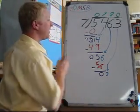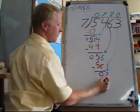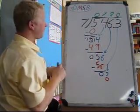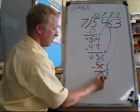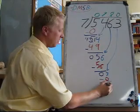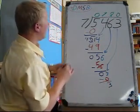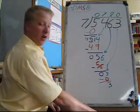M multiply. 0 times 7 is 0. S subtract. 3 minus 0 is 3.